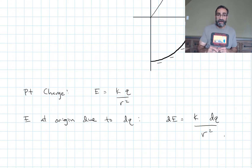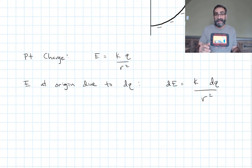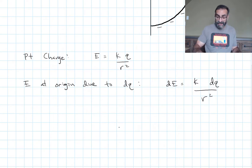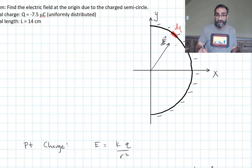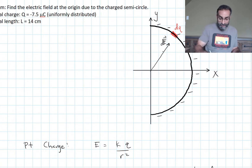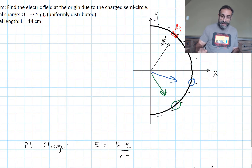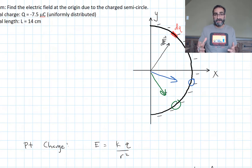But the electric field is a vector quantity, so we can't just add them up. Each little dq produces an electric field in a different direction — one points up and to the right, one this way, one that way. We have to break them into components first, because you can only add vectors in the same orientation.